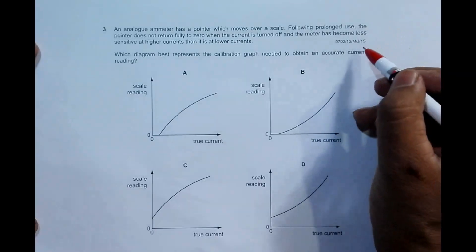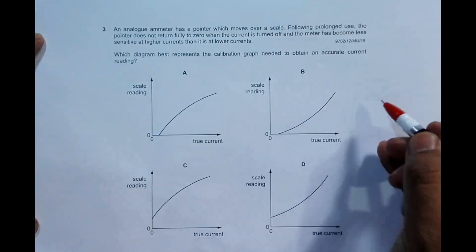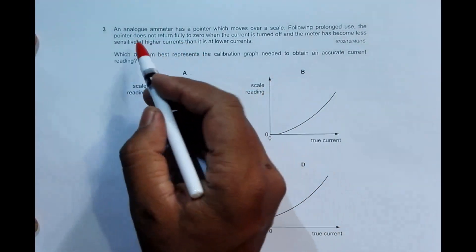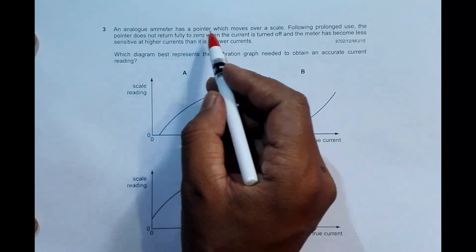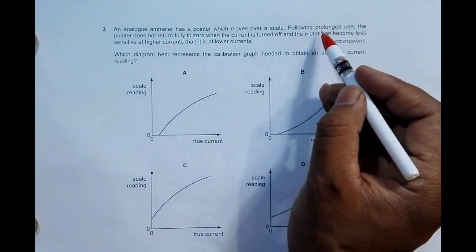Hello folks, this is 2015 major exam paper 1-2, question number 3. It's about an analog ammeter. An analog ammeter has a pointer which moves over a scale. Following prolonged use, the pointer does not return fully to zero when the current is turned off.